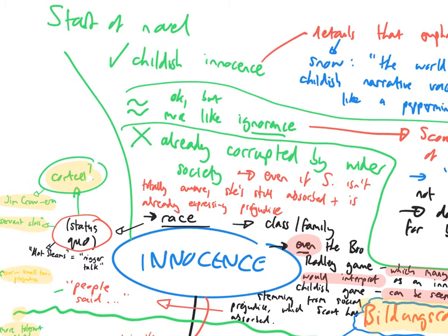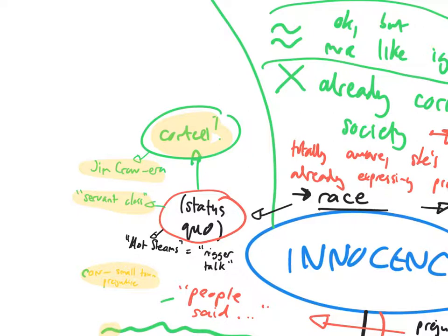Even if Scout isn't totally aware, she is still already expressing prejudice. She has still absorbed what society has told her. So the context point that we link to here is clearly the Jim Crow era deep south. She has grown up in this time of segregation. Remember the words of Alice Lee: you knew black people but you didn't know them socially. They were quote a servant class. Scout is accepting this status quo that referred to blacks, that saw blacks as somehow inferior beings.